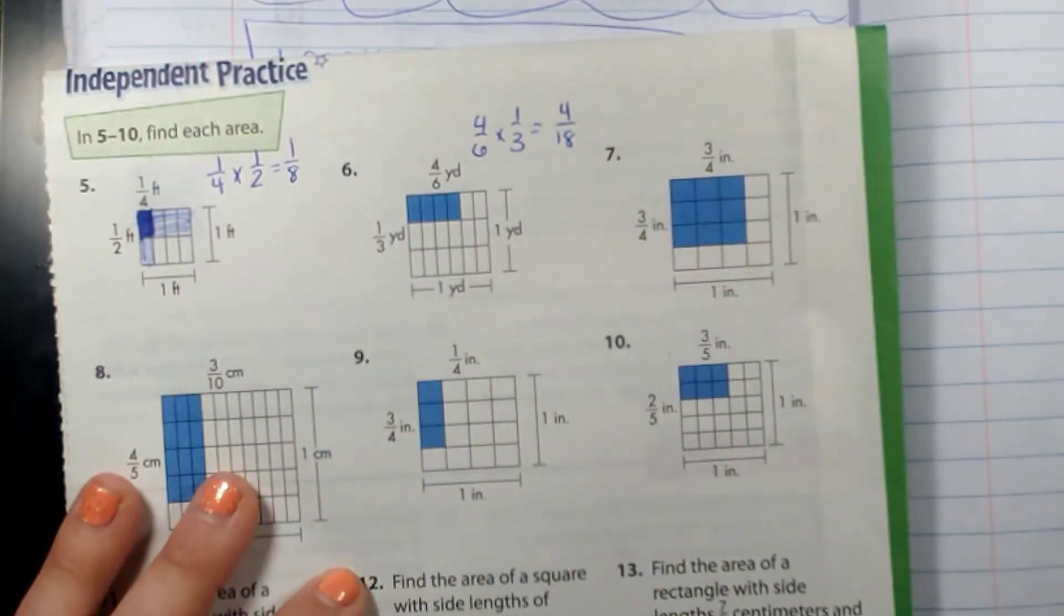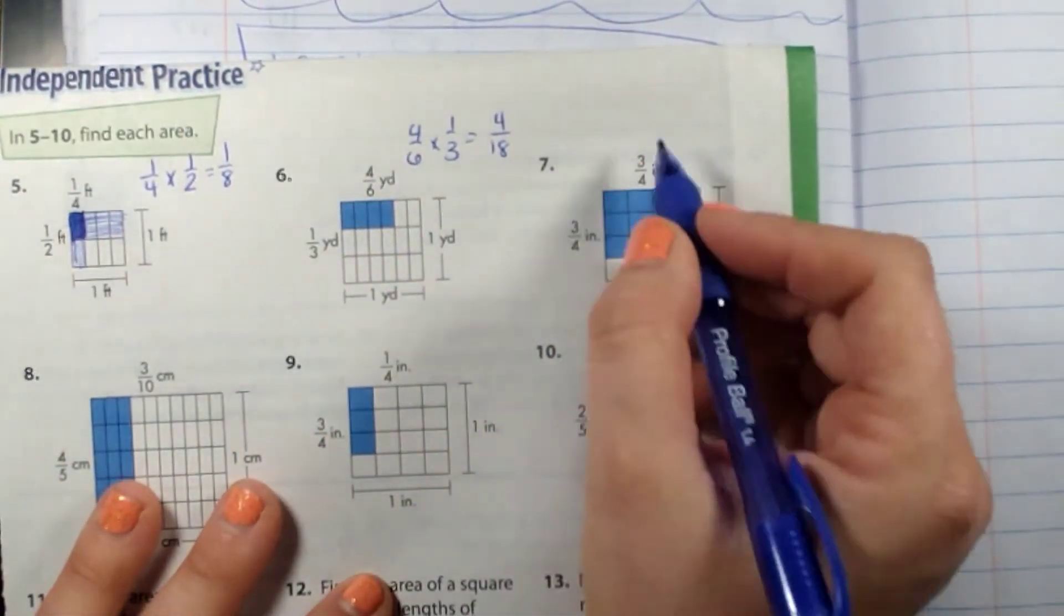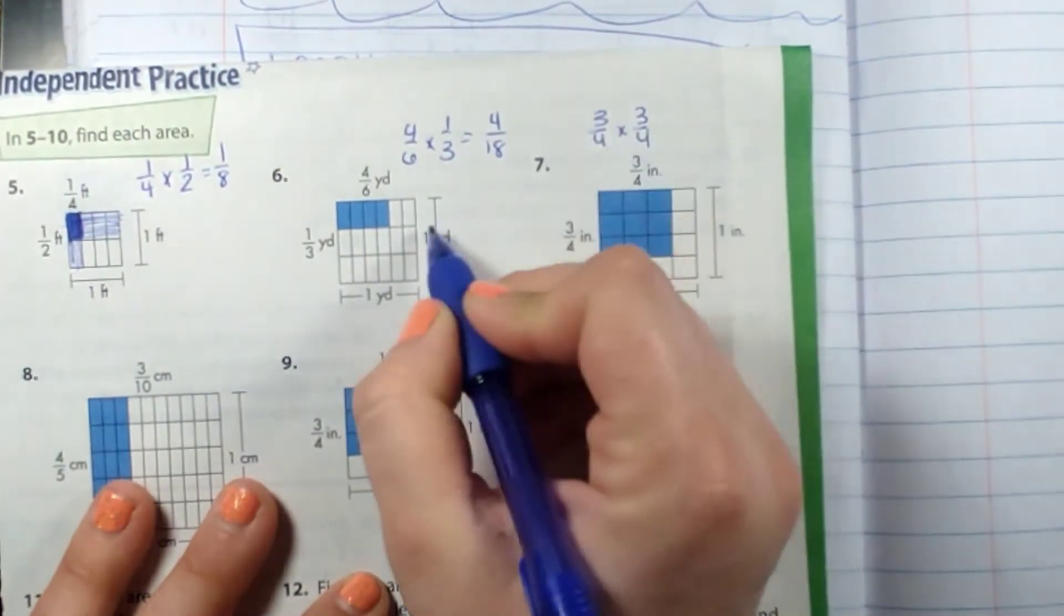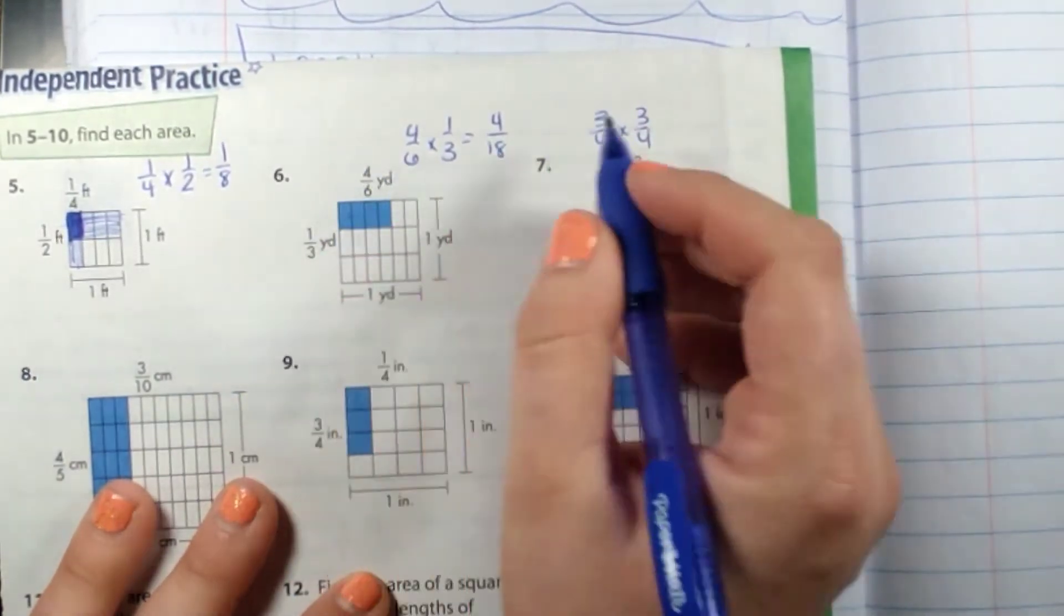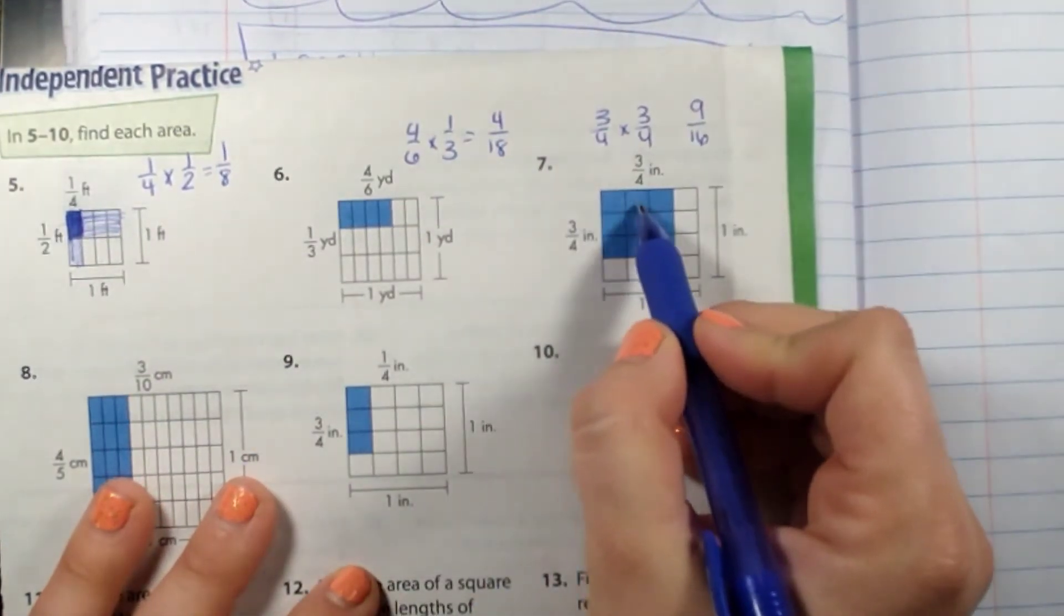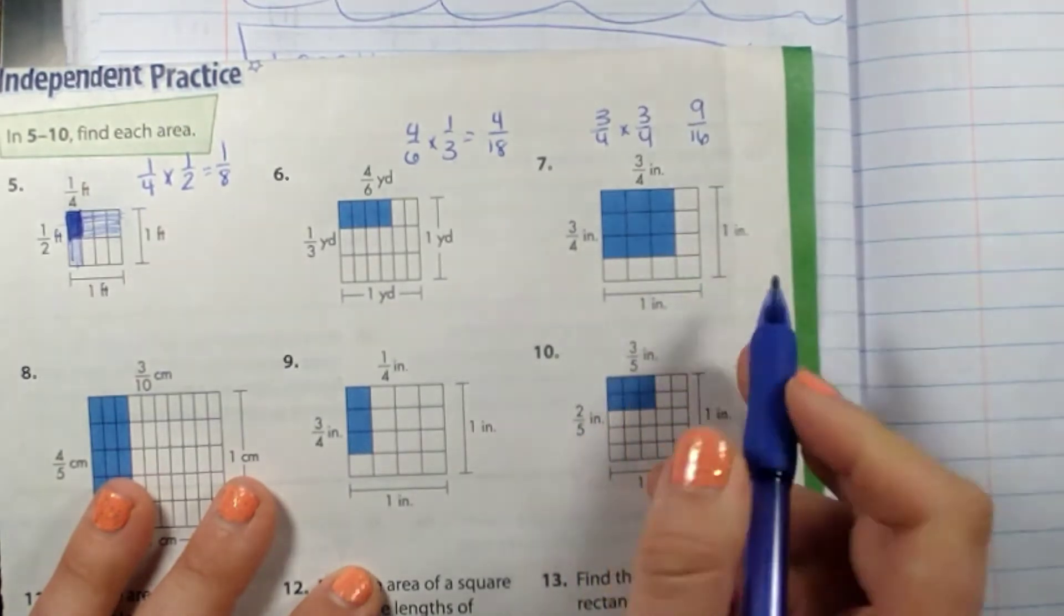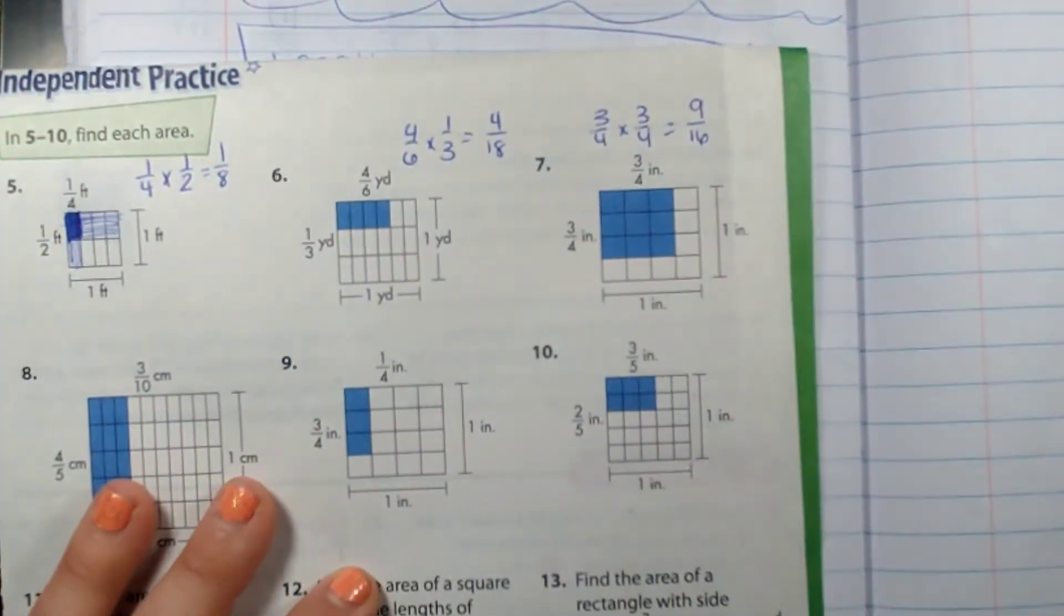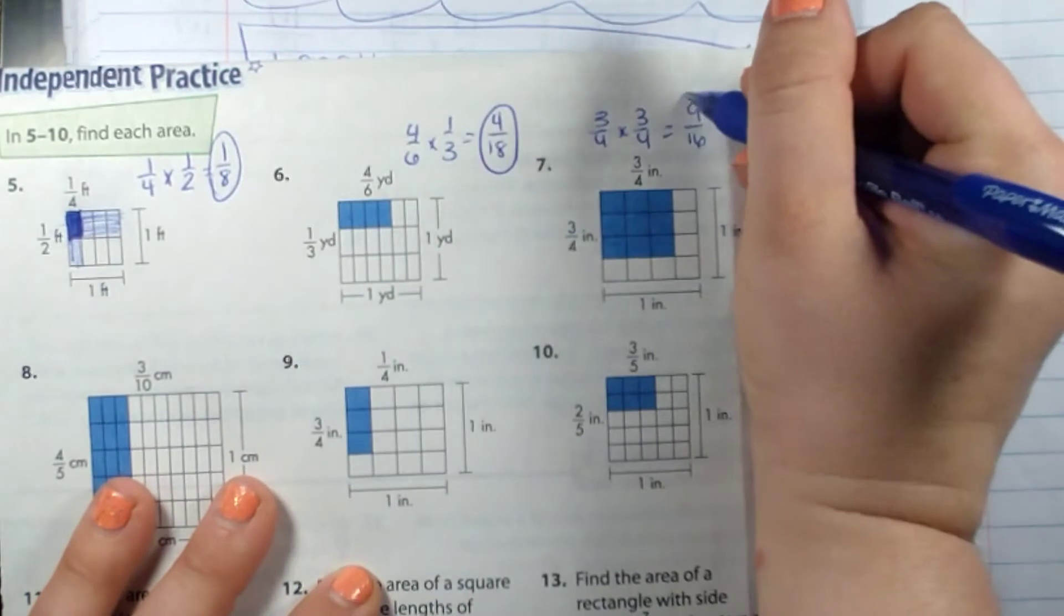If I was going to do this one, three fourths times three fourths. Three fourths times three fourths—don't let this one yard and stuff like that throw you off, just look at the measurements here. This would be nine sixteenths. Let's look: one, two, three, four, five, six, seven, eight, nine, ten, eleven, twelve, thirteen, fourteen, fifteen, sixteen. How many do I have shaded? One, two, three, four, five, six, seven, eight, nine. There we go.